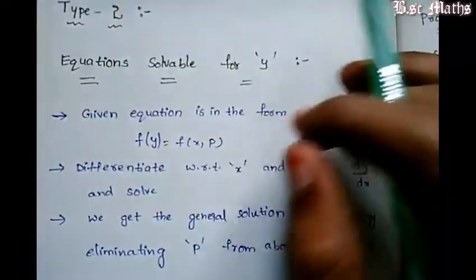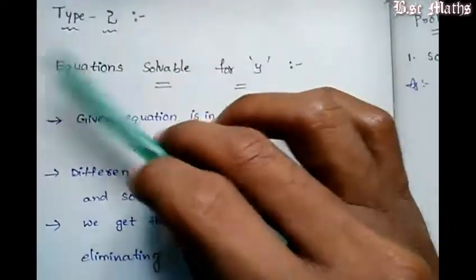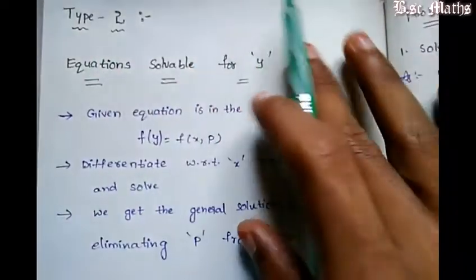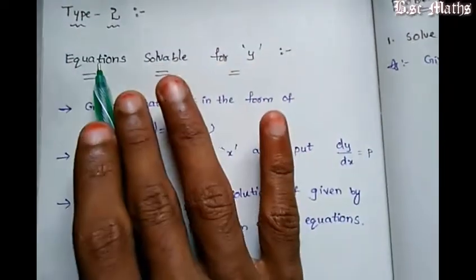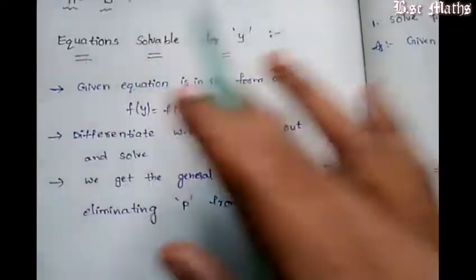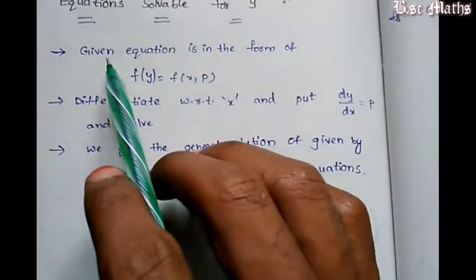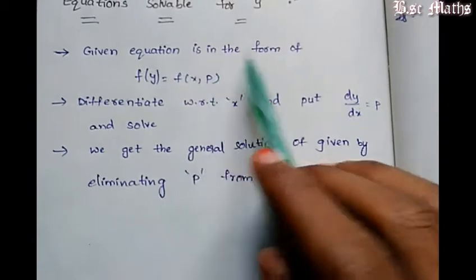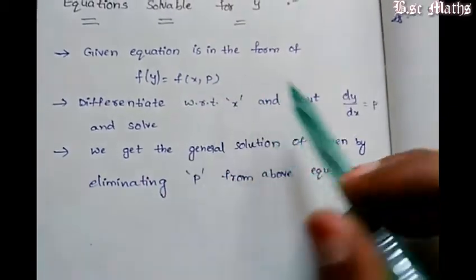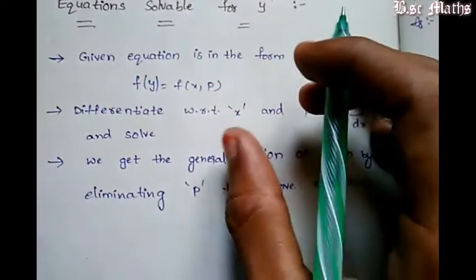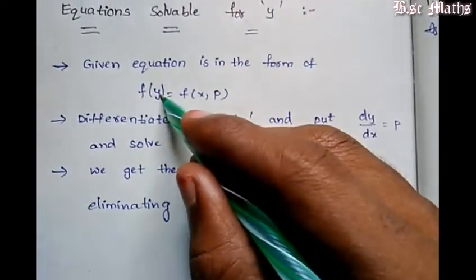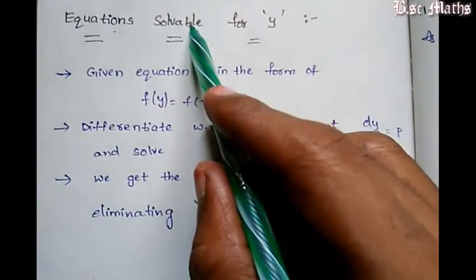We have Type 2 equations — equations solvable for y. The given equation is in the form of f of y equals f of x, p. So the first one is y, equations are solvable for y.